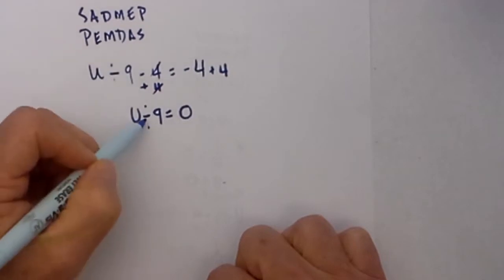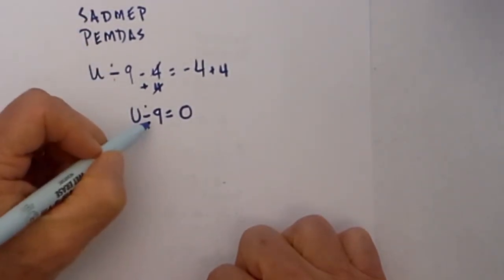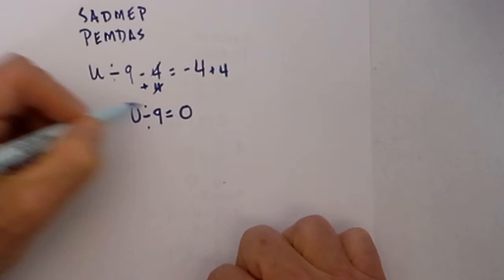Next up is division because I don't have an addition, so I need to get rid of the division with multiplication.